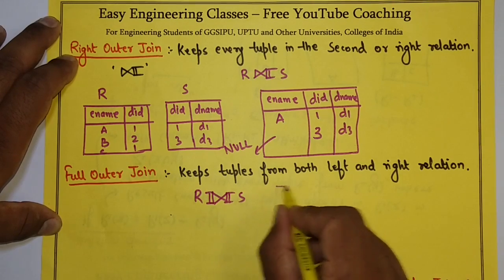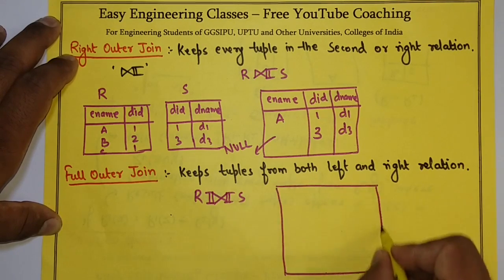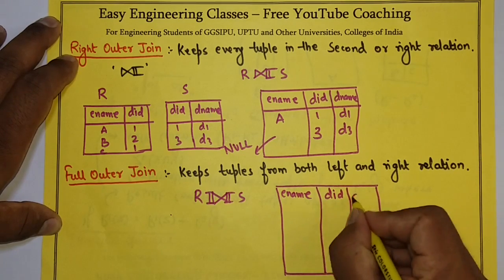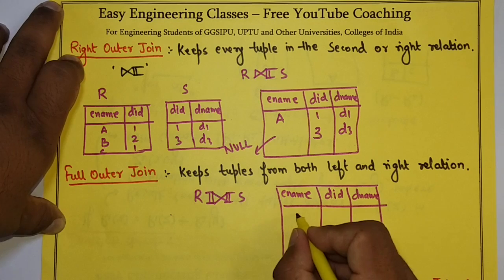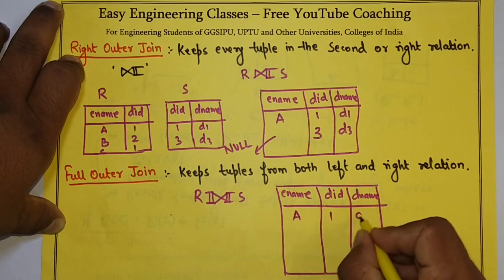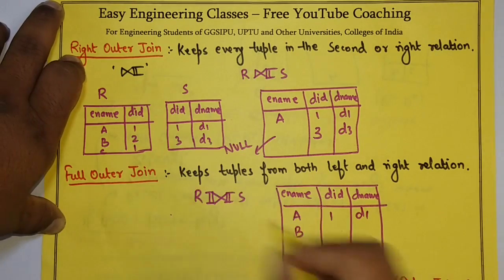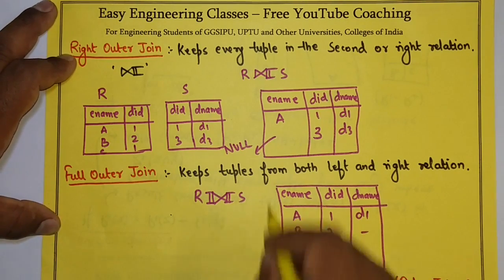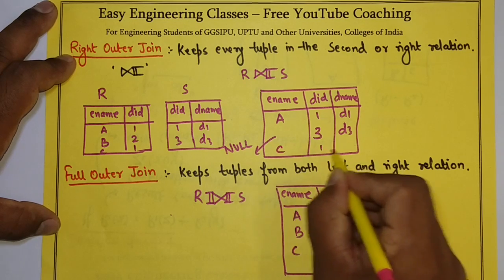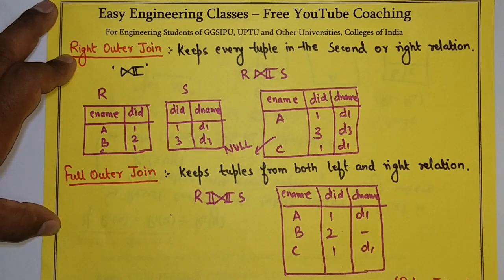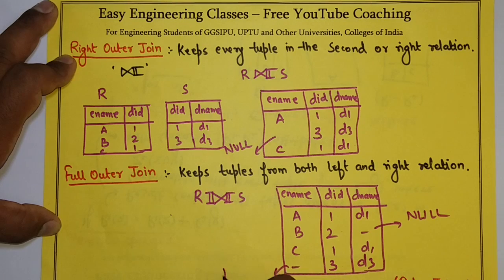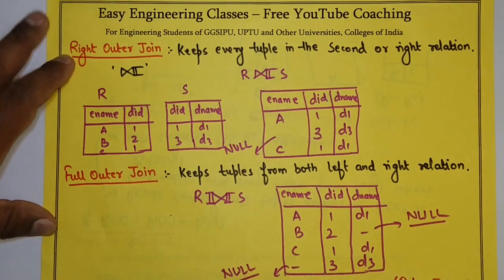Similarly, if I perform full outer join on these two relations, I will get a relation with all possible values. Columns: ename, department id, department name. A maps to 1 and D1. B has no matching department name, so NULL. C has a match — C, 1, D1. For department id 3 with D3, there is no matching employee, so ename is NULL — giving 3, D3. Both RHS and LHS relation tuples are included in the result.